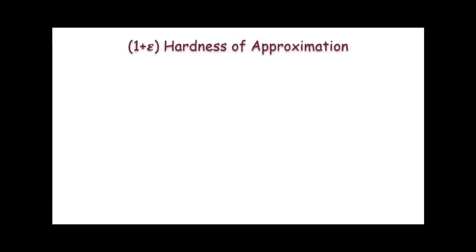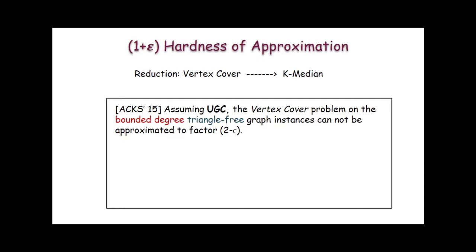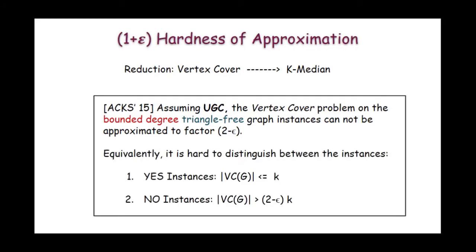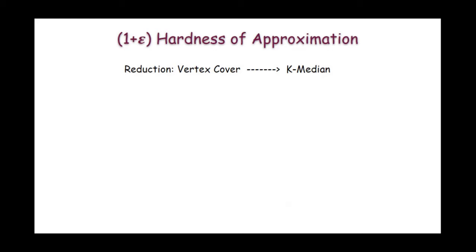So now let us look at the hardness of approximation of the Euclidean k-median problem. We will show a reduction from the vertex cover problem to the k-median problem. For the vertex cover problem, it is known that assuming the Unique Games Conjecture, the problem cannot be approximated to any factor smaller than 2, and this result holds for bounded degree triangle-free graphs. Equivalently, it is hard to distinguish between instances which have vertex cover smaller than k and instances which have vertex cover greater than (2 minus epsilon) times k.